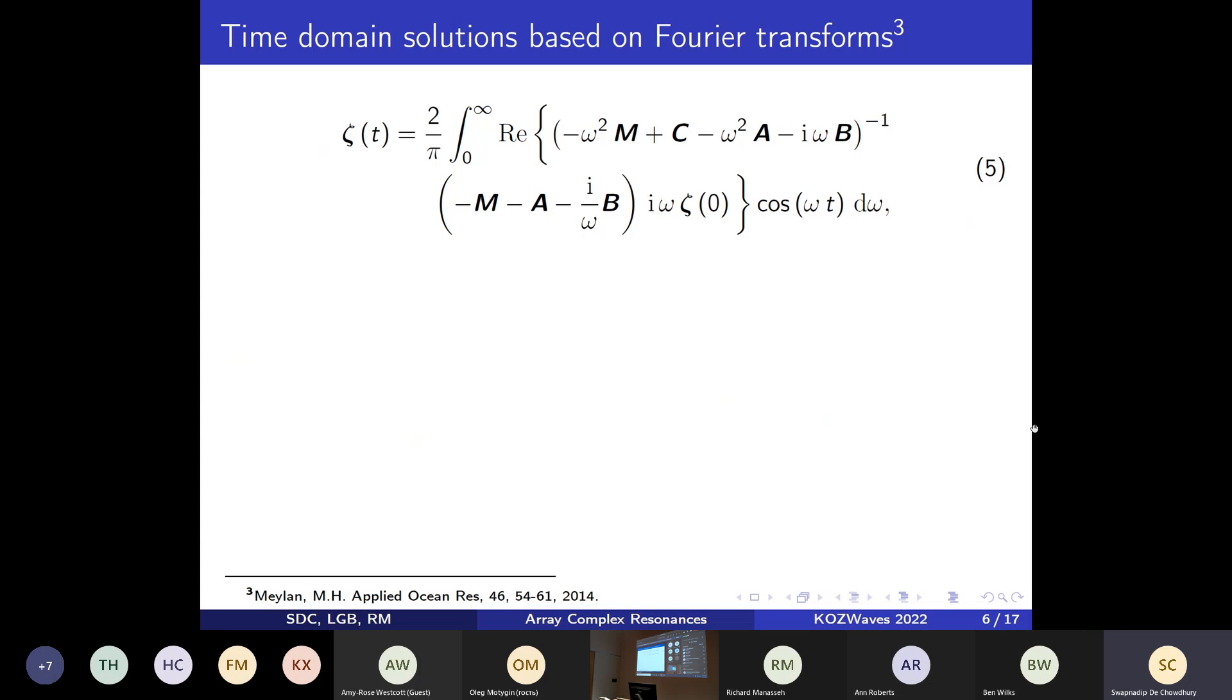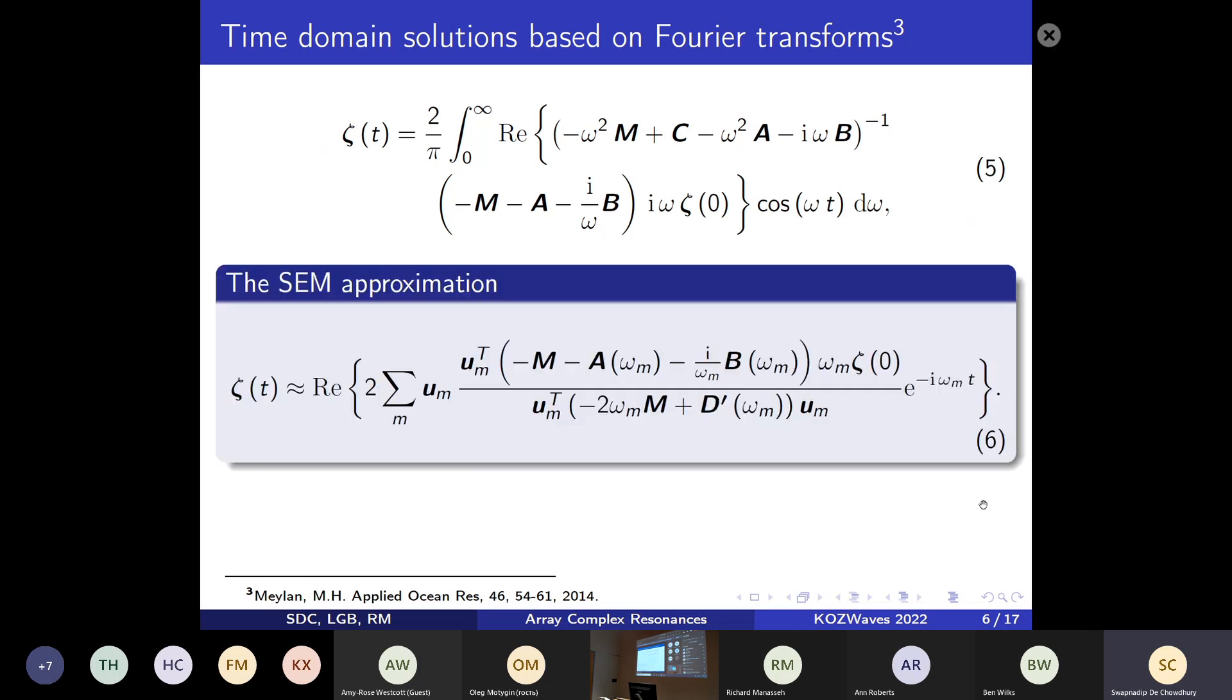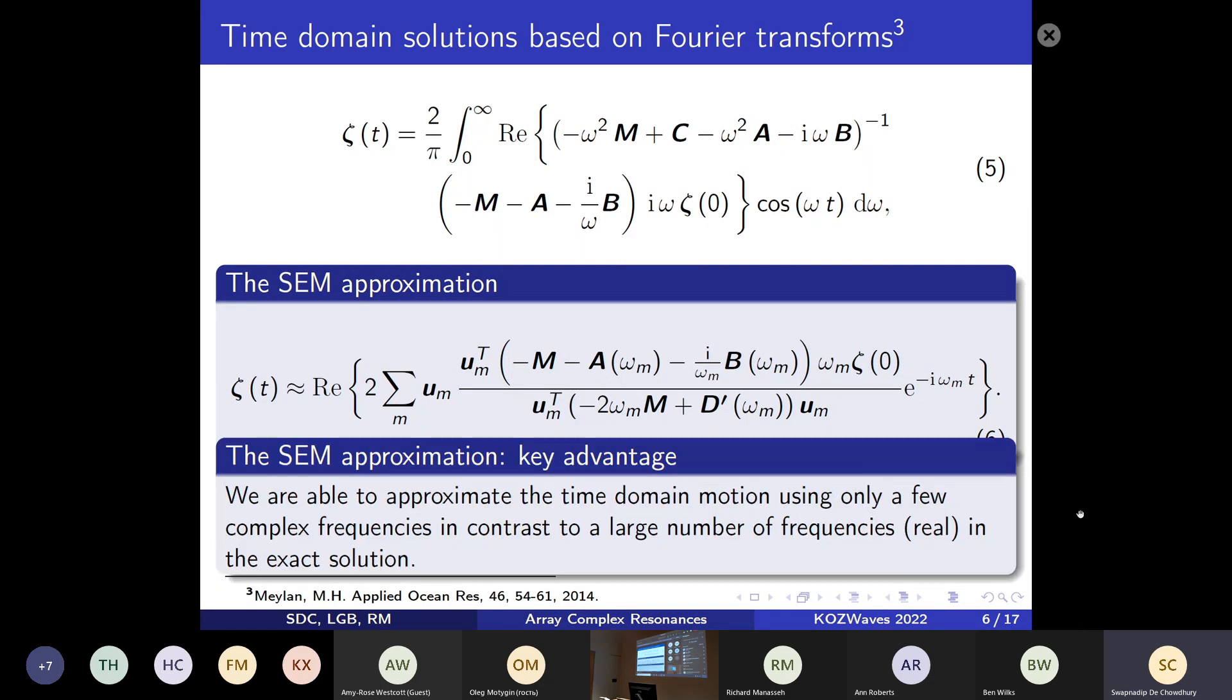Let's first look at the final exact solution of the motions for the cylinders that we obtain from the Fourier transform from frequency domain to time domain, as you can see in equation number five. If you look at the approximation we can obtain from the SEM, it's actually a sum over poles. Clearly, in SEM we're able to write down the solution using only some complex frequencies rather than using the large number of real frequencies required to carry out this integration in the exact solution with sufficient accuracy.